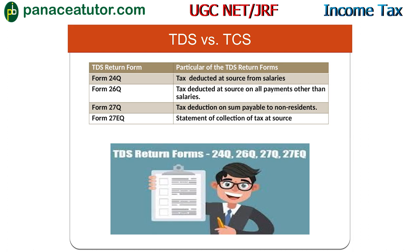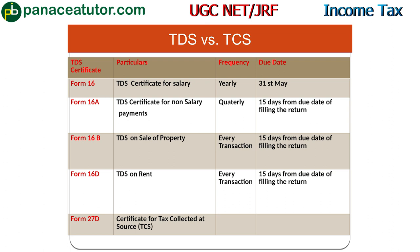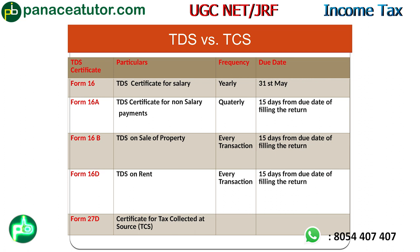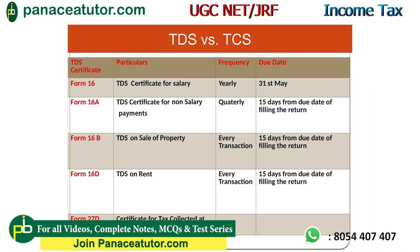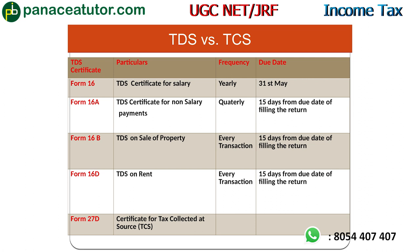Additionally, a TDS certificate must be issued to the person whose TDS was deducted. Form 16 is for salary payments — issued annually; Form 16A is for other payments — issued quarterly, within 15 days from the due date of filing the return; Form 16B is for sale of property — per transaction; Form 16C is for TDS on rent — per transaction; Form 16D is for TDS on rent — per transaction. Form 27D is the certificate for TCS.